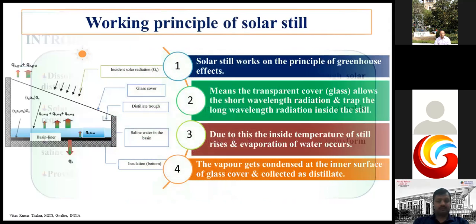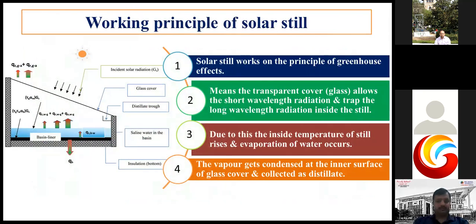The working principle of solar still is basically the greenhouse effect — the transparent glass cover allows short wavelength radiation in and traps long wavelength radiation inside the still. Due to this, the inside temperature of the still rises and evaporation of the water occurs. The vapor gets condensed at the inner surface of the glass cover and is collected as distillate.